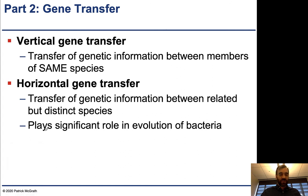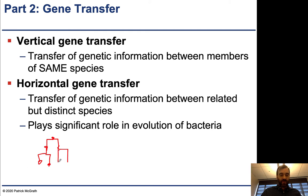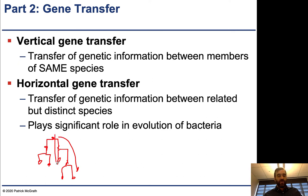Vertical gene transfer occurs between members of the same species. An individual cell might divide into two, and you follow this process along — this is how members of the species are generated. Each keeps generating new bacteria through division, and genetic material gets exchanged in this vertical direction. Over a long enough period, speciation can occur if lineages evolve independently.